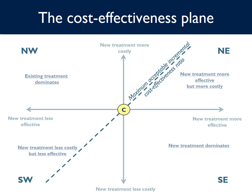This line is very useful to interpret the results of an economic evaluation. If the new treatment is below the line, then it is cost effective and should be implemented. If the new treatment is above the line, then it is not cost effective and should not be implemented. For example, if a new treatment is represented by the red dot located here, we can see that it is cost effective because it is below the line and as a result should be implemented.